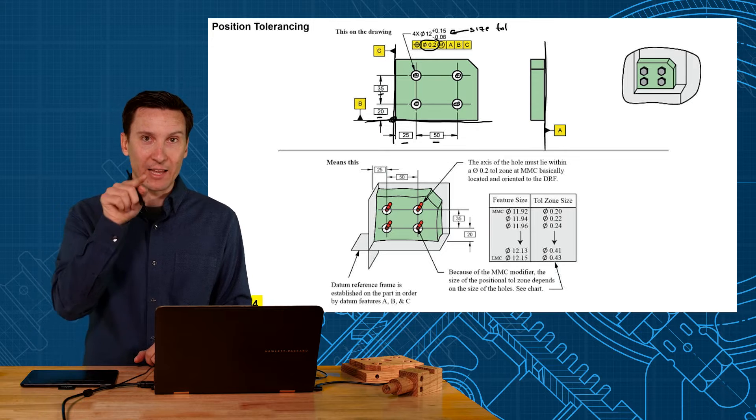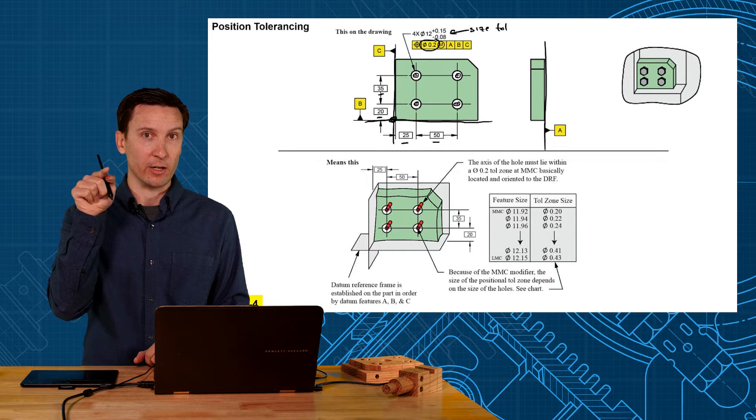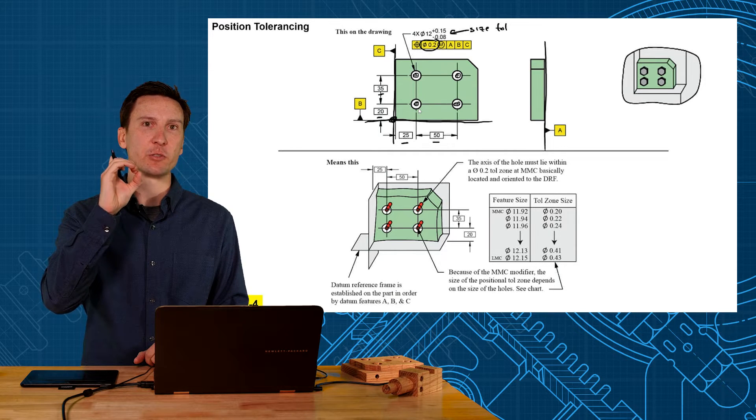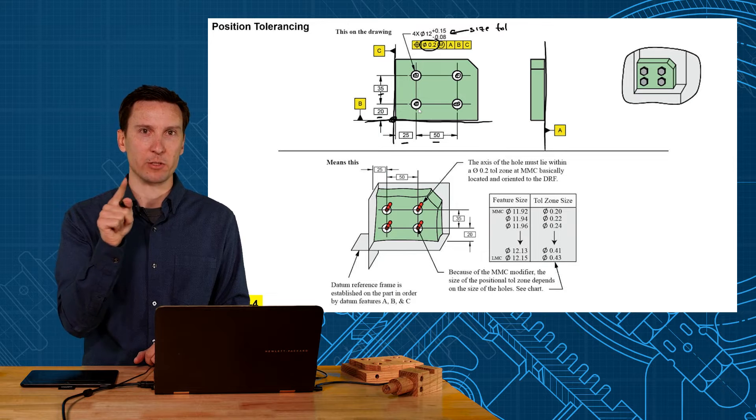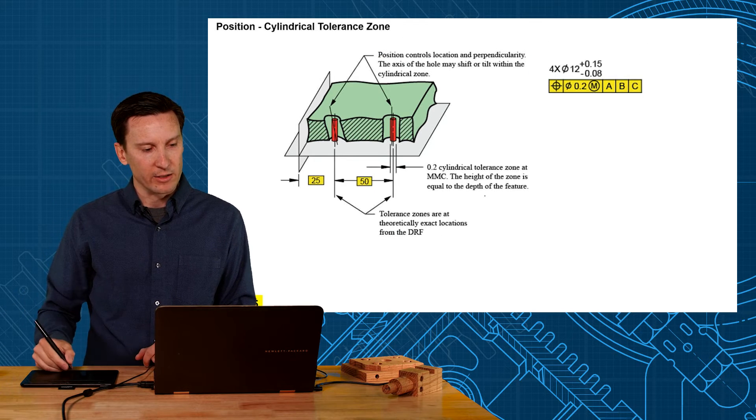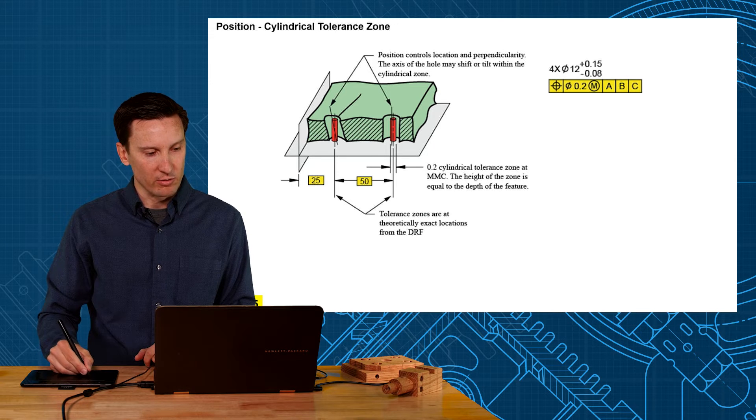Now worst case, how much can that axis shift off center if they're produced at MMC? Only 0.1. So remember diameter tolerance zone is 0.2, but that's really plus or minus 0.1.